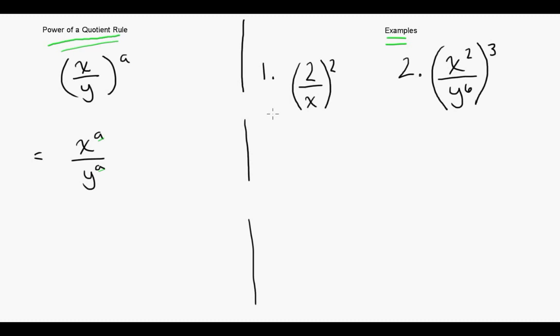So let's look at a couple of examples. Here we have 2 over x all squared, so that 2 is going to come in so we're going to get 2 squared over x squared, and then that simplifies to just 4 over x squared.